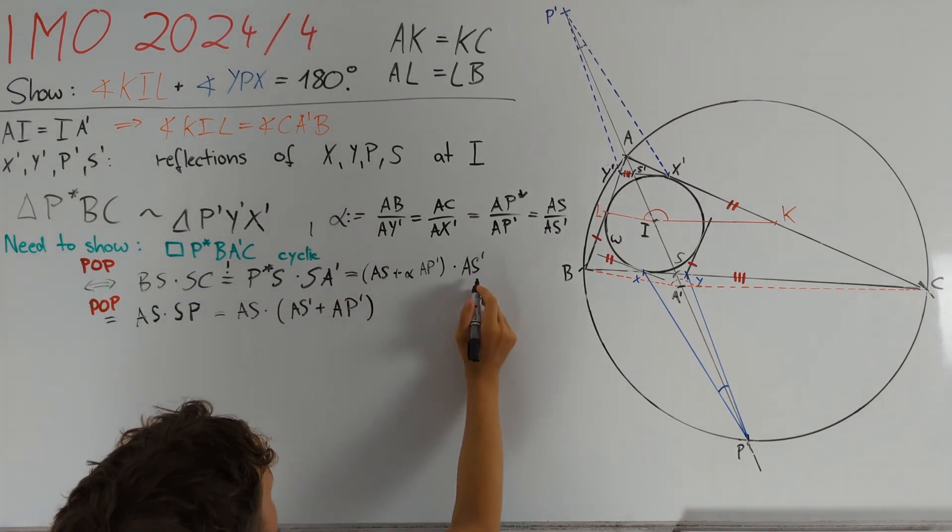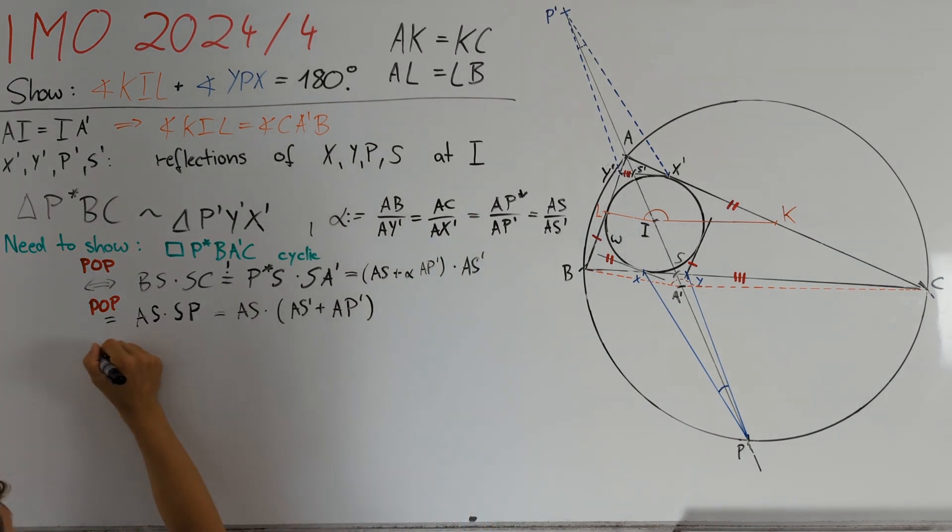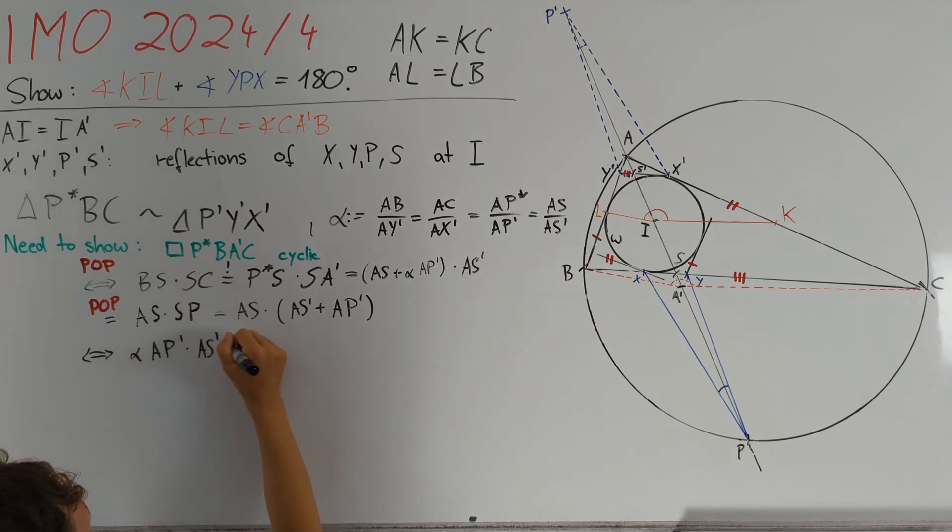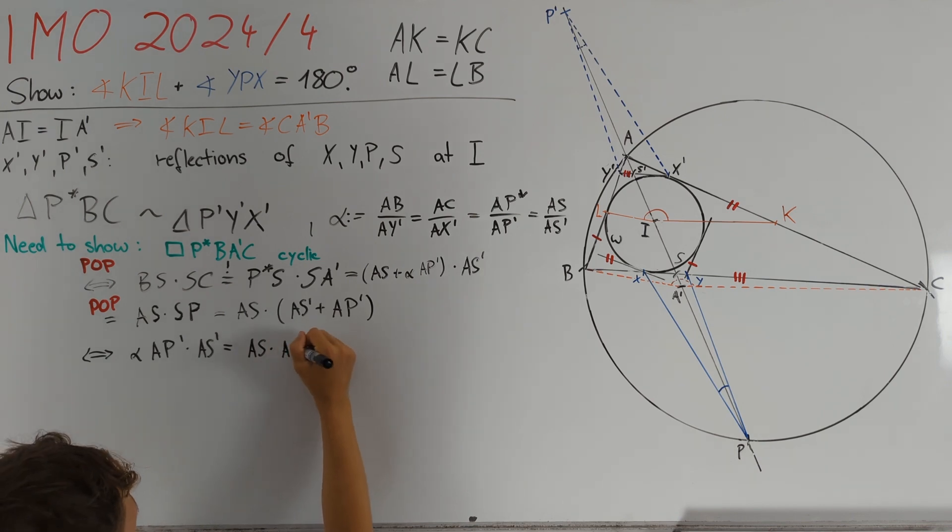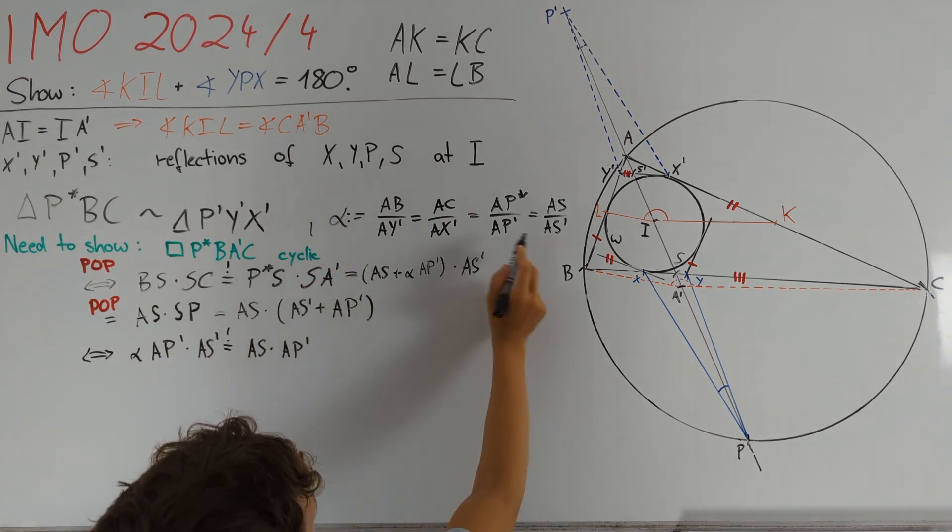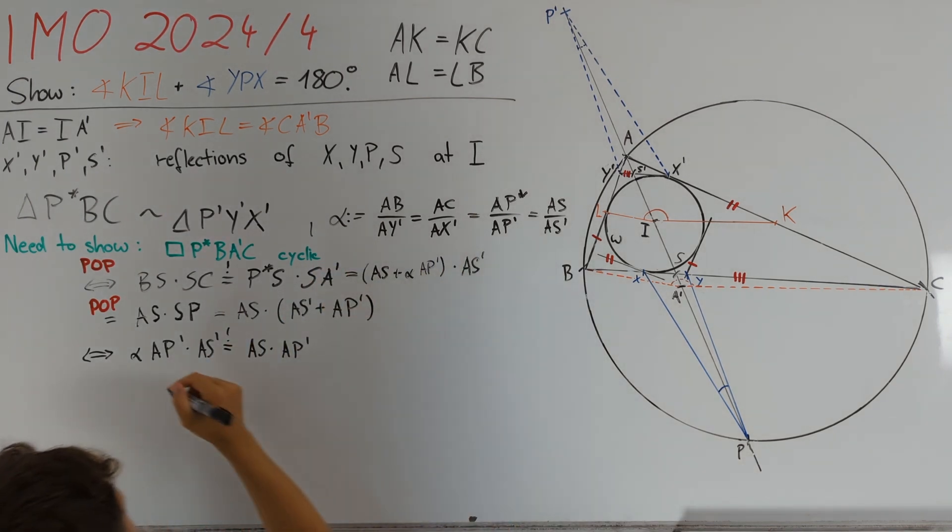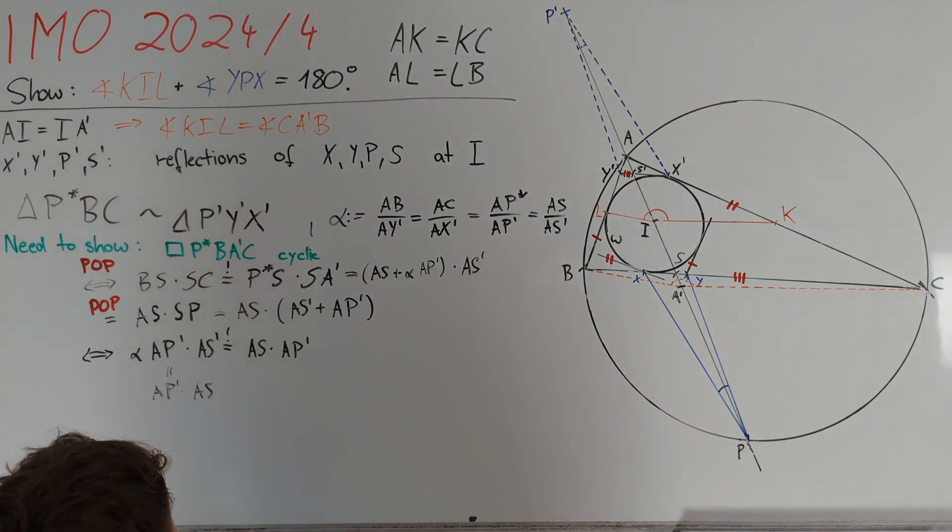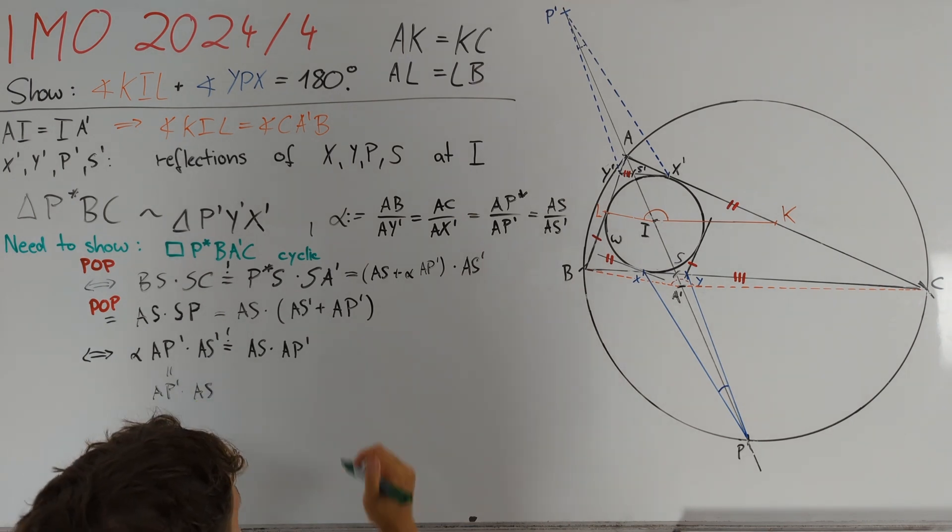And subtracting AS times AS prime from both sides, we get that this equality is equivalent to alpha AP prime times AS prime is equal to AS times AP prime. But since alpha is equal to AS divided by AS prime, the left side is nothing but AP prime times AS, which is what we needed to show. And therefore, we are done.